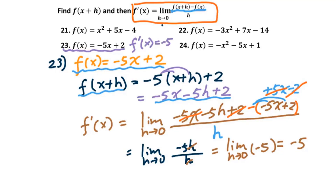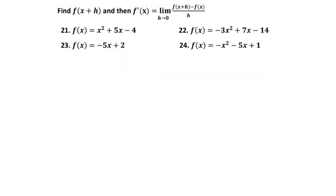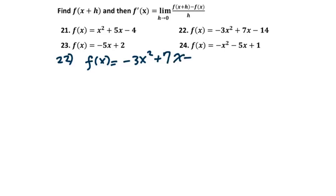In other words, the derivative equals the slope. Now let's go to problem 22. We have f(x) = -3x² + 7x - 14.